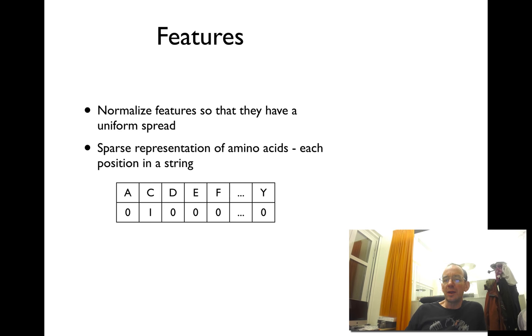This means that the input layer is going to be very large. So if you have 10 amino acids, you will have 200 input nodes.